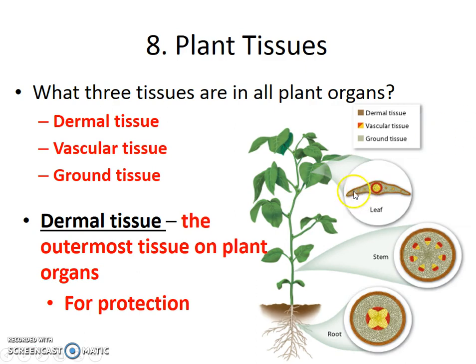Dermal tissue is on the outside — the brown portion of each root, stem, or leaf. Vascular tissue is the red and yellow parts of the leaf, stem, and root. And ground tissue is kind of everything in between. Every plant organ — every root, stem, and leaf — has all three. Dermal tissue is always on the outside, vascular tissue is always in little bundles throughout, and ground tissue is always in between the dermal and vascular — it's really everything else that's there. Dermal tissue, regardless of whether it's on the leaf, stem, or root, is always on the very outside and is always there to protect the plant.